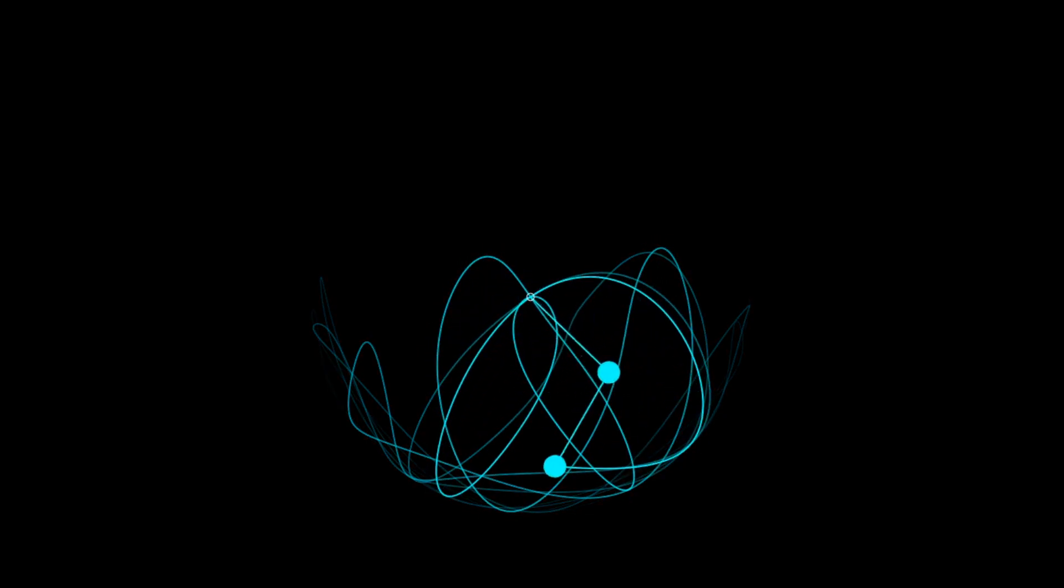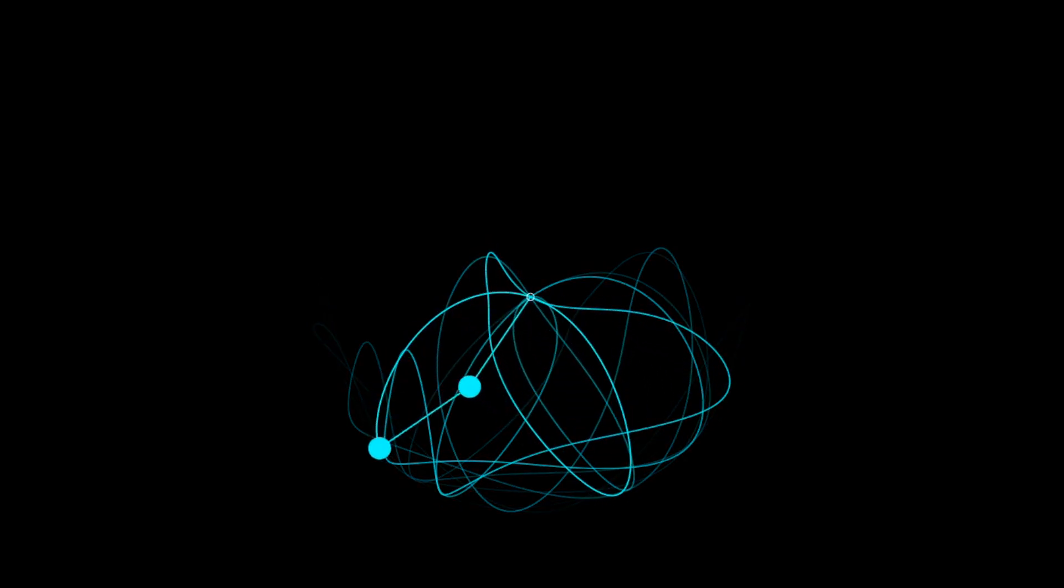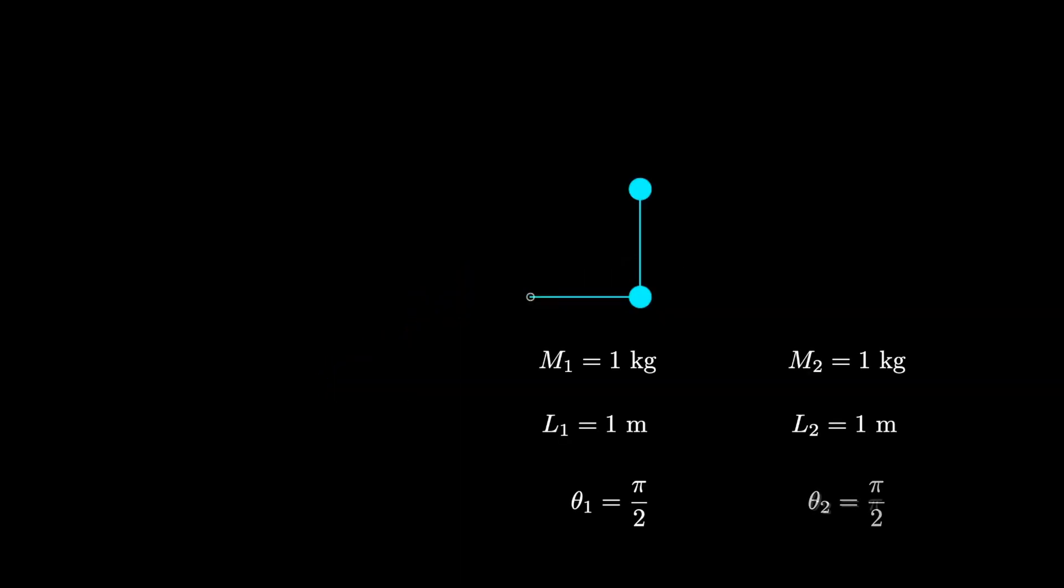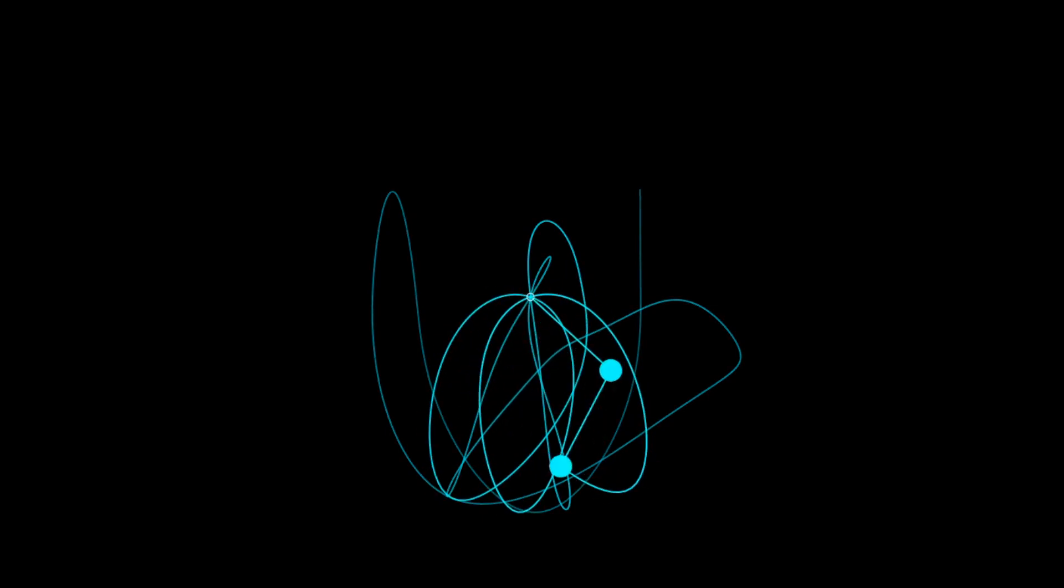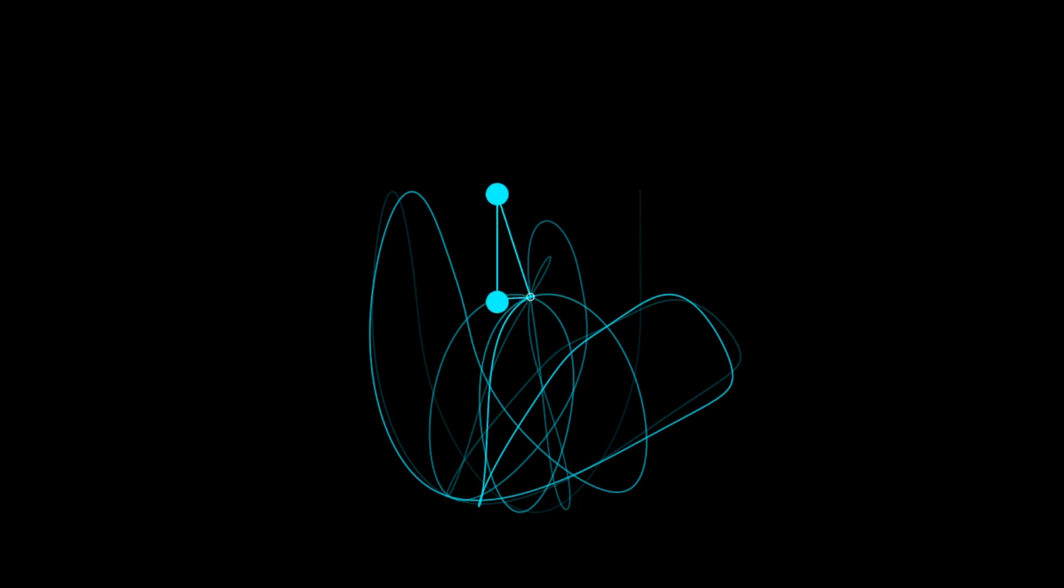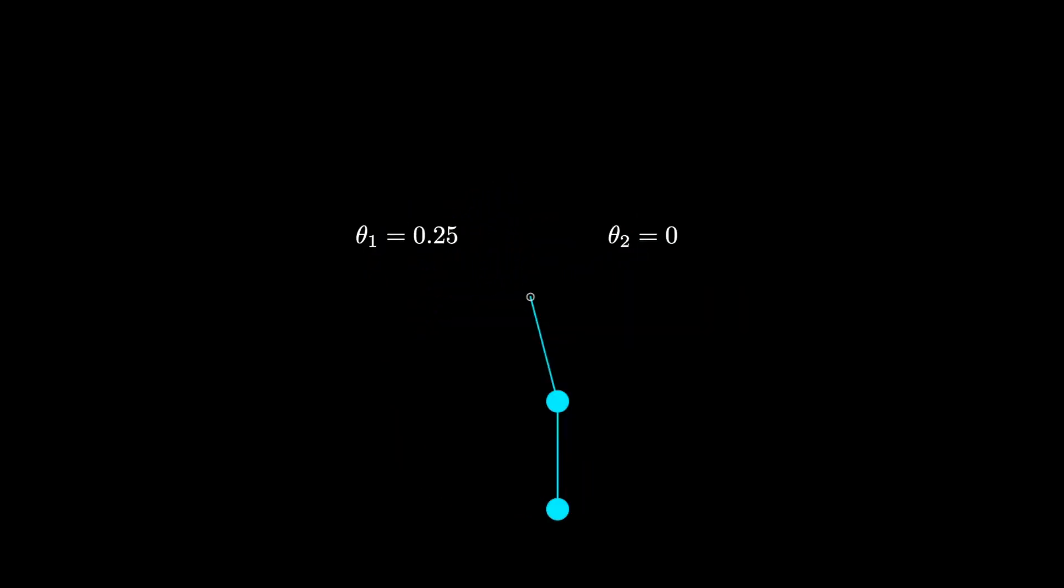But remember, this is produced entirely from equations that are deterministic. Let's try another starting point. Here we get a very complicated motion from the get-go. Okay, next, let's take a look at what happens if we set our initial angle to be really small.